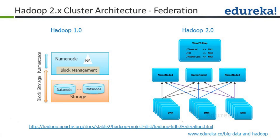To ensure the name node is not a single point of failure, there are two concepts. One is the federated name node, which ensures the name node is not a single point of failure. The second is high availability. These are the two concepts that address the name node single point of failure problem.